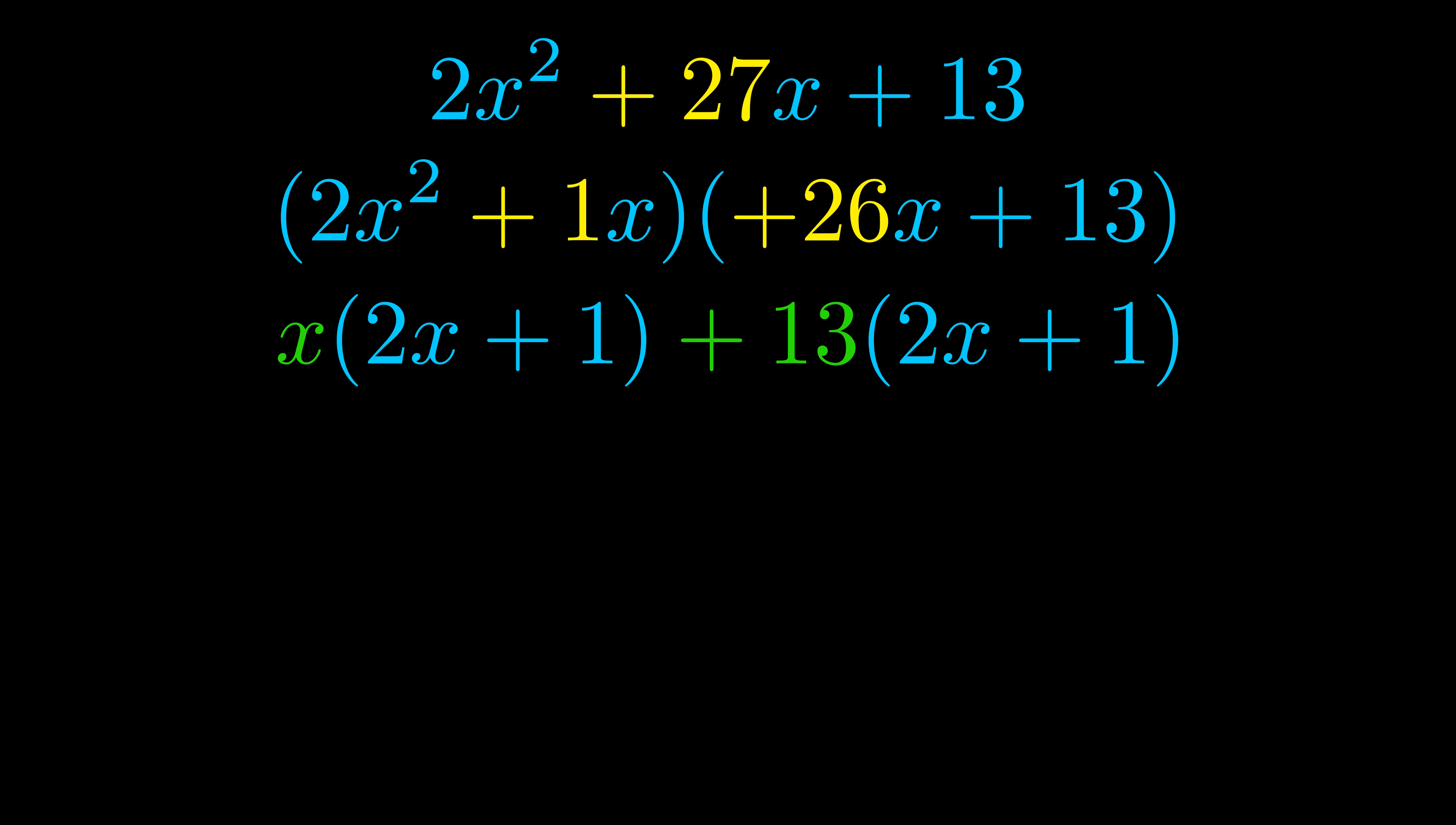Notice also how what remains inside of the parentheses is the same in both cases. The blue values are the same. Those blue values will become one of our factors, and we will combine the two green values, the GCFs that we pulled out, to get the other one. And that is our fully factored equation.